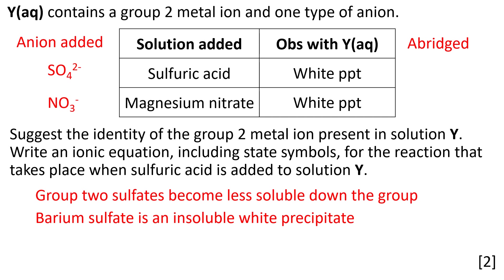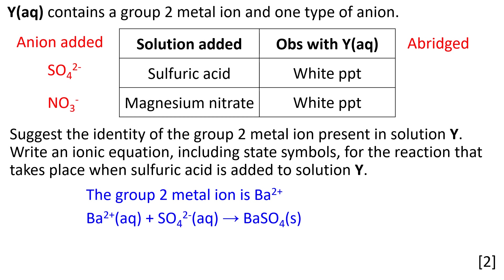You should be aware that barium sulfate is an insoluble white precipitate. Group 2 sulfates become less soluble down the group — this is studied under group 2 chemistry. The group 2 metal ion is barium 2+. The ionic equation for this is given there. The state symbols are essential as they show that a precipitate — a solid product — is formed.